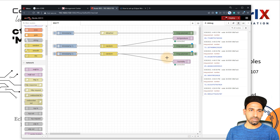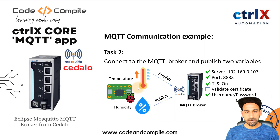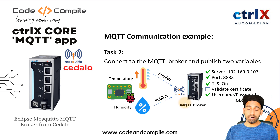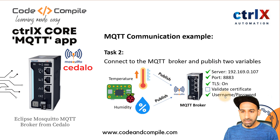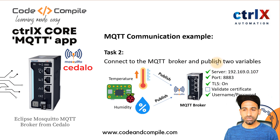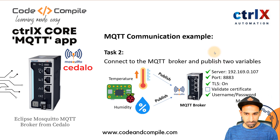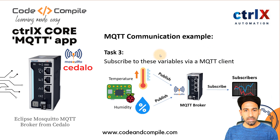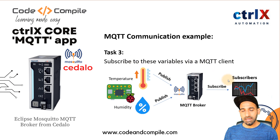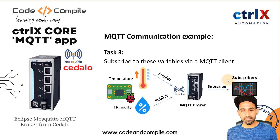So that's how the integration is done. Raspberry Pi is sending two values — temperature and humidity — to the MQTT broker in Ctrl X core. We have published two values into the MQTT broker, which was the task. Now task three is to subscribe to these variables via an MQTT client. We'll use another client to show how multiple clients can connect to the Ctrl X broker.